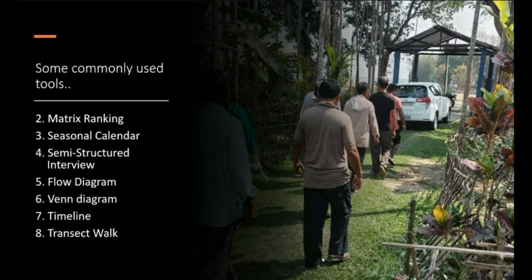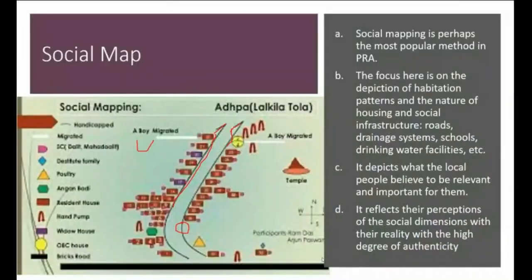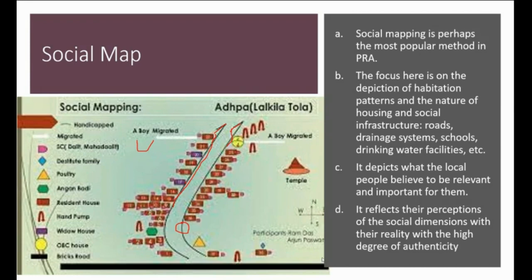What is a social map? In case of social map, it is the most commonly used — village mapping, social mapping, or wheel mapping, or sometimes we can combine all the maps together. Social mapping is already the most popular tool in PRA. The focus here is on the depiction of settlement patterns and the nature of housing and social infrastructure. From that, you can obtain specific data like nature of housing and social infrastructure, roads, drainage systems, and so on. We will not get all types of information — it depicts what the local people believe to be relevant and important for them.